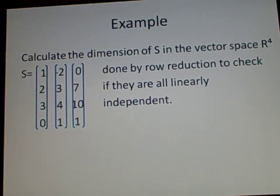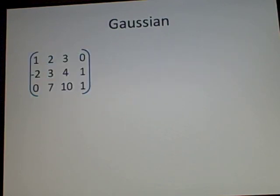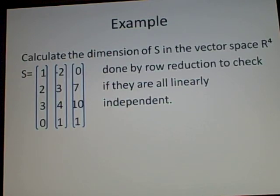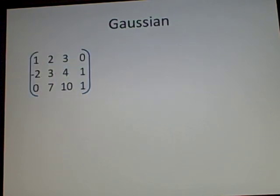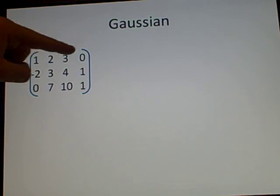We'll use Gaussian elimination. This is the same equations we had before, just flipped on its side. Then we do Gaussian elimination: minus two of this row...